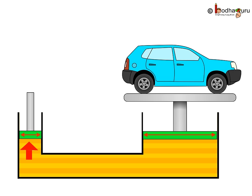So here, we say A2 is greater than A1 where A2 and A1 are the cross-sections of the two arms of the U-shaped tube.